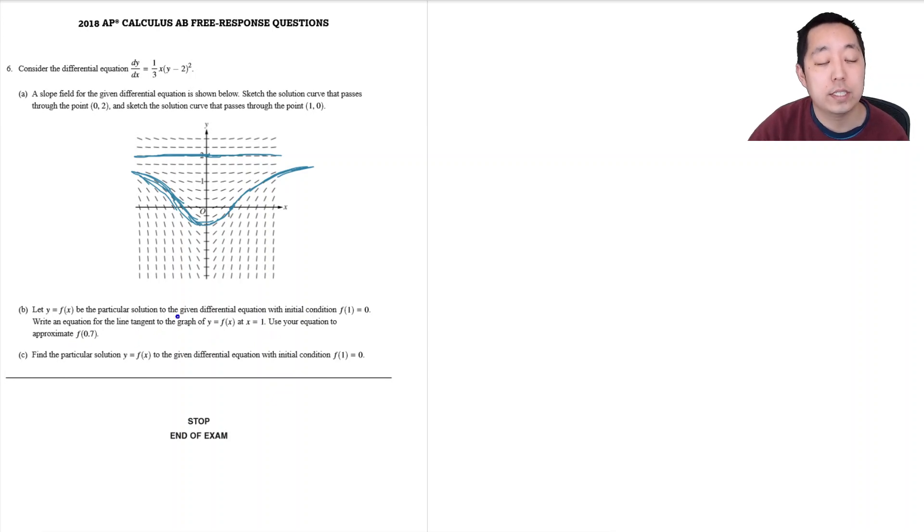So let's take a step one at a time. Write an equation for the line tangent to y equals f of x. I need to know the slope. Whenever you need to do tangent line, you need two things: you need a slope and a point that it's going through. So I need to use my slope point form y minus y naught equals m times x minus x naught.